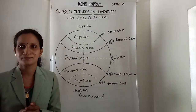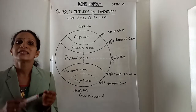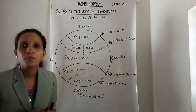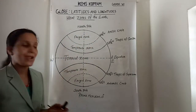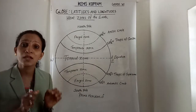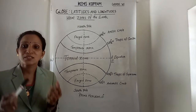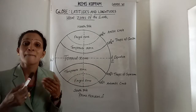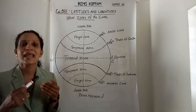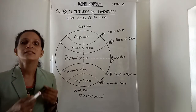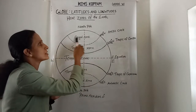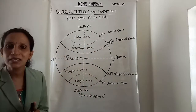The Frigid Zones are the areas lying between the Arctic Circle and the North Pole in the northern hemisphere, and the Antarctic Circle and the South Pole in the southern hemisphere. The sun does not rise much above the horizon here, so its rays are always slanting and provide less heat. This is the North Frigid Zone and this is the South Frigid Zone.